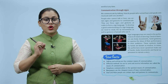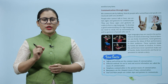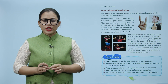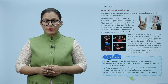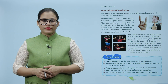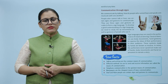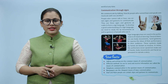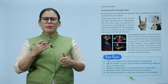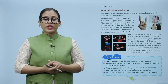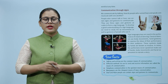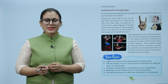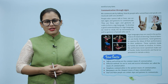Star facts: Talking and writing are the common means of communication. Different methods we use to send and receive information are called the means of communication. Telephone communication is the quickest means of communication. Newspapers are the cheapest means of mass communication. Deaf and mute people use certain signs and gestures to communicate.